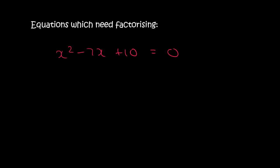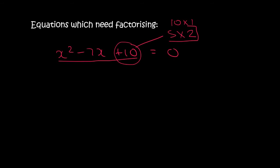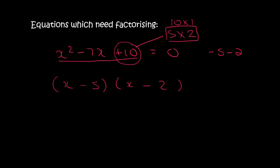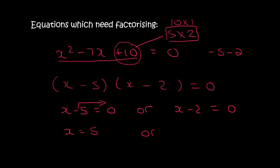Here's an x squared that is not going to cancel, so you factorize. What type of factorizing is this? It's a trinomial. We look at the number 10, and 10 is 5 times 2 or 10 times 1. A 5 and a 2 can make minus 7 by saying minus 5 minus 2. So we open up two brackets: x and x, minus 5, minus 2. Normally if this were the factorizing chapter you'd stop there, but now that we have equals 0 we go one step further. We say x minus 5 equals 0 or x minus 2 equals 0, and solving each gives x equals 5 or x equals 2.